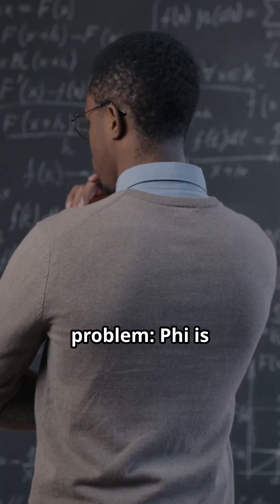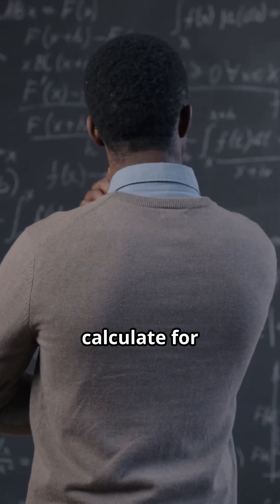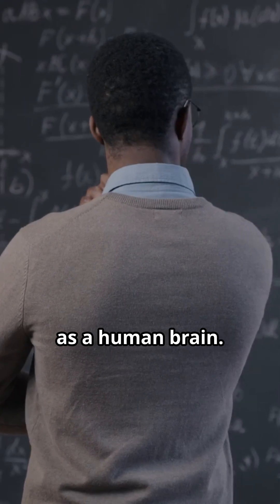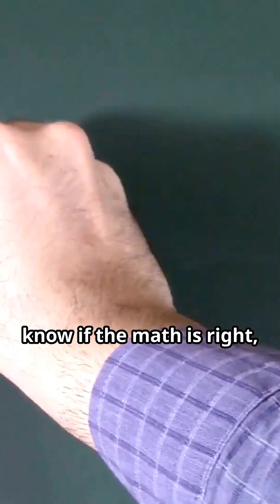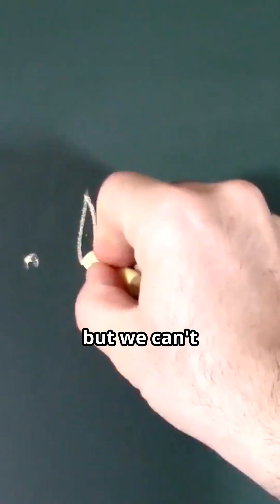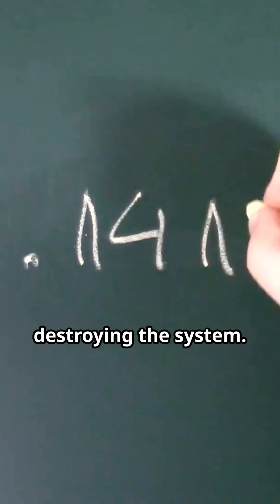Here's the brutal problem: Phi is nearly impossible to calculate for something as complex as a human brain. It's a catch-22. To know if the math is right we need to measure it, but we can't measure it without potentially destroying the system.